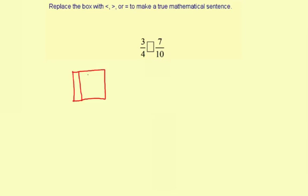So 3 fourths will look like this, more or less. And we're going to have this one shaded, this one shaded, and that one shaded. So that's 3 fourths.